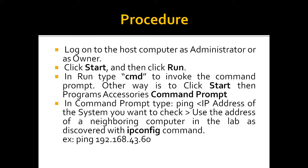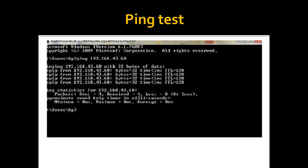The procedure is explained in this slide. First, log on as an administrator, then click Start and then Run, type CMD in the command prompt, or we can directly go to Start, then Programs, Accessories, and Command Prompt. In the command prompt, type ping then the IP address of the system which we want to check. Here an example is shown: ping 192.168.43.60. A successful ping test is shown — we can see the number of packets sent, received, and lost. It also shows the round-trip time in milliseconds.